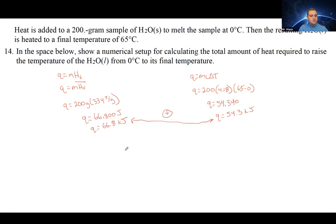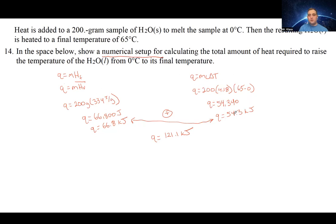Now we want to know the total heat, so we add both values: 66.8 kilojoules plus 54.3 kilojoules equals a total Q of 121.1 kilojoules. These are practice Regents questions. If the exam asks for a numerical setup, just give the setup — I do not recommend doing all the math, because there's a lot of room for error. I solved these so you can better understand how to use the equations, especially for multiple choice questions.